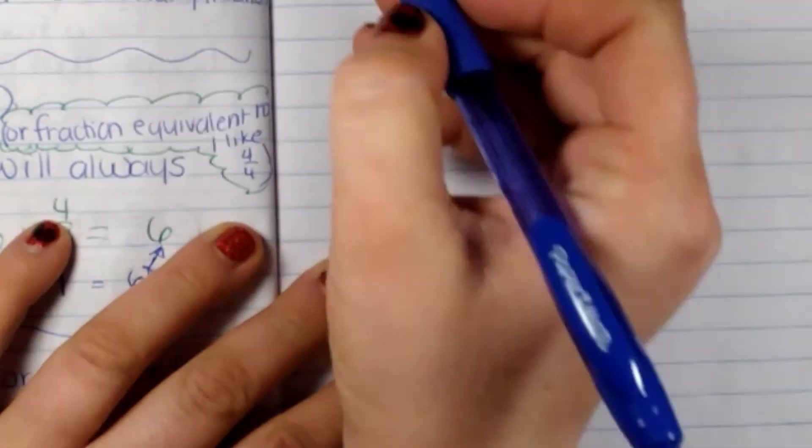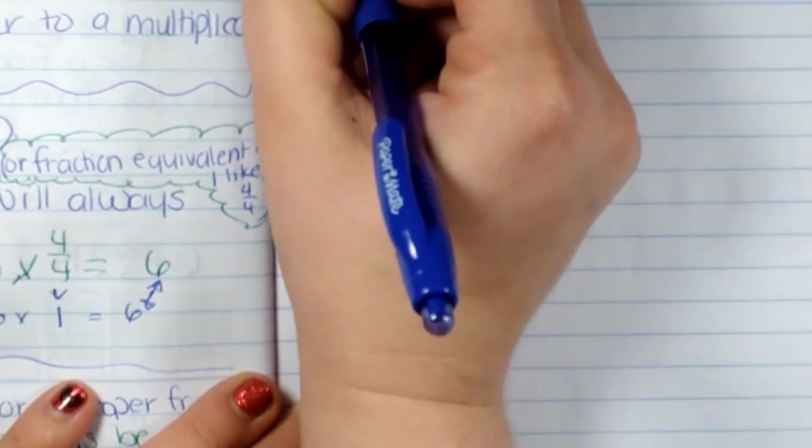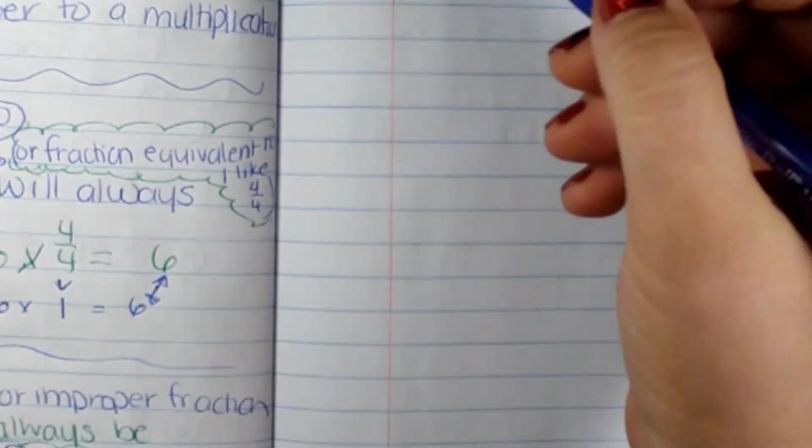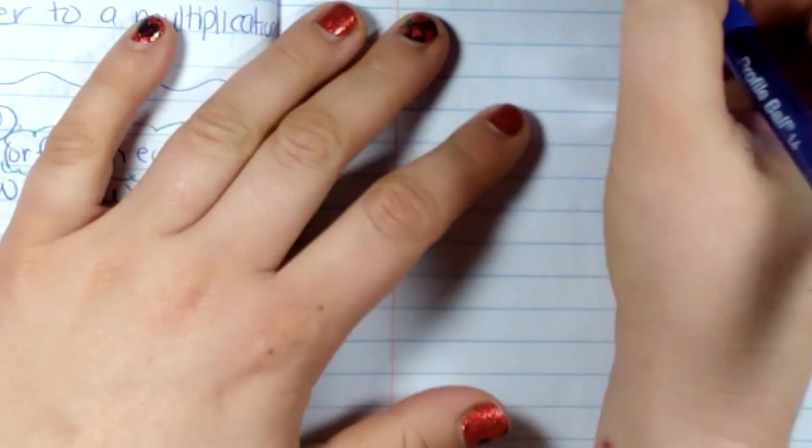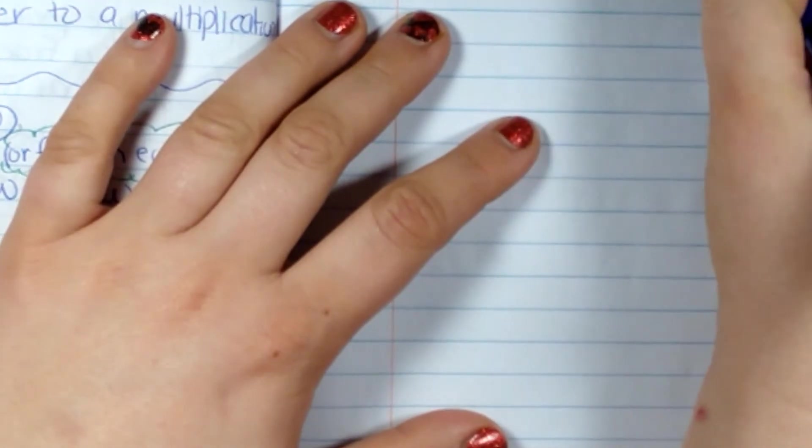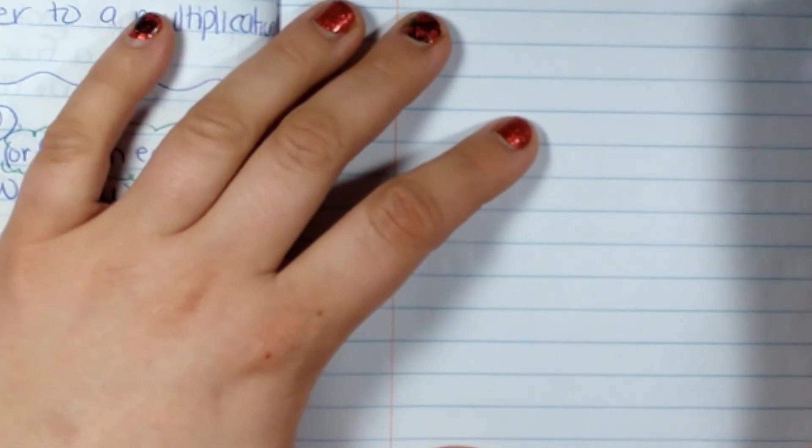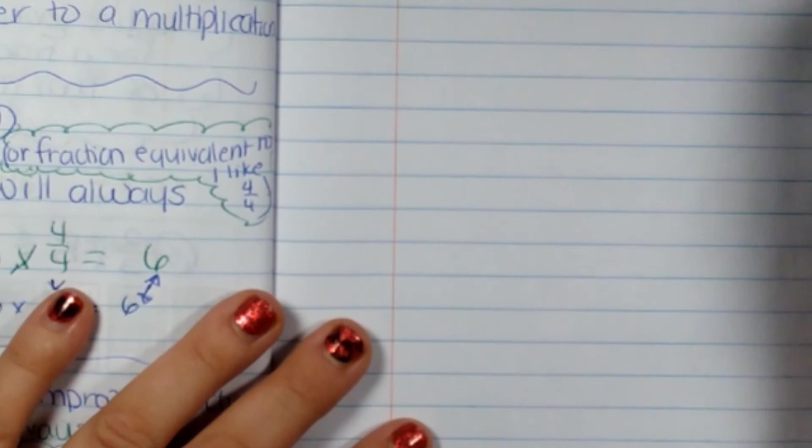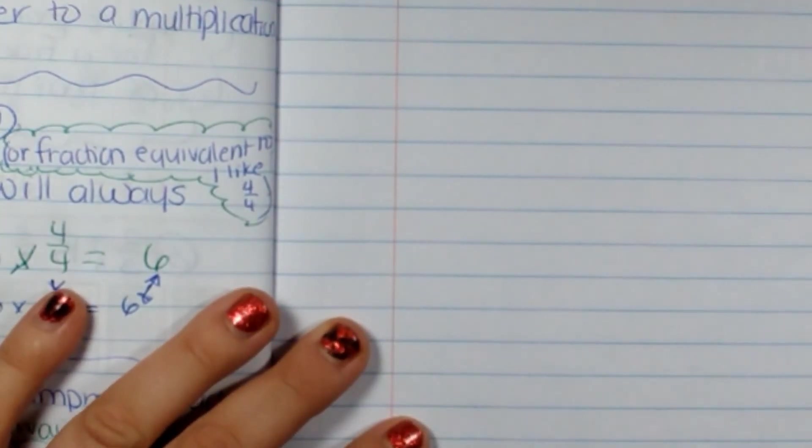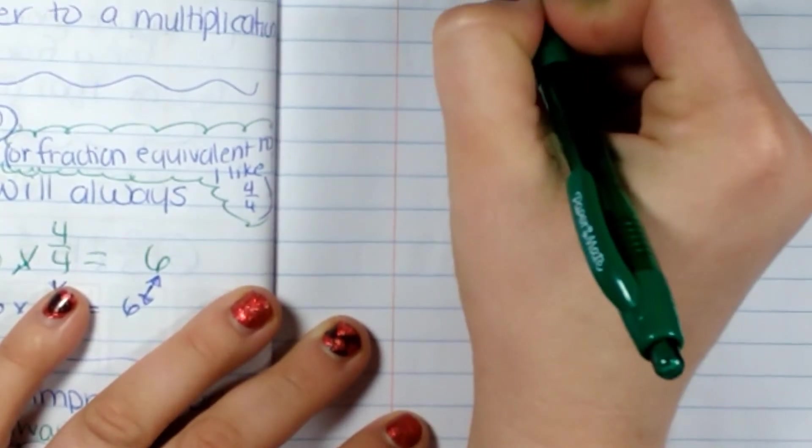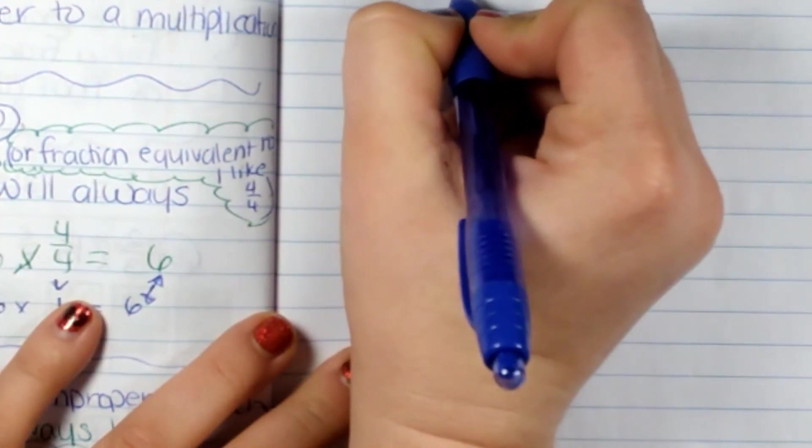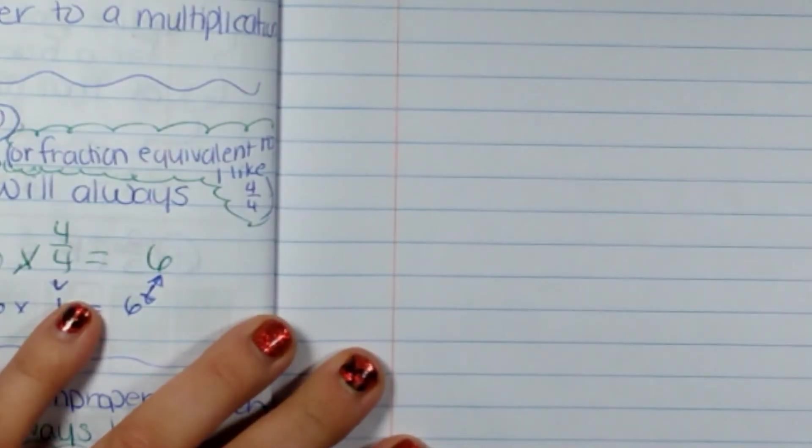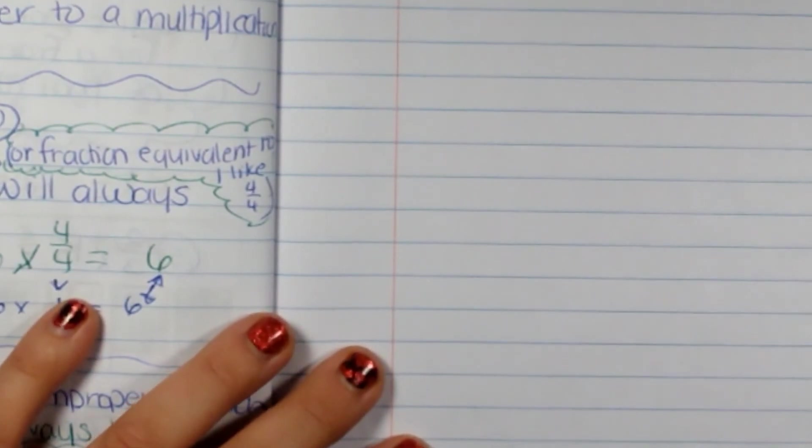Now I'm going to go over here to my next and final rule. If the first factor is less than one, the product will be less than the second factor.